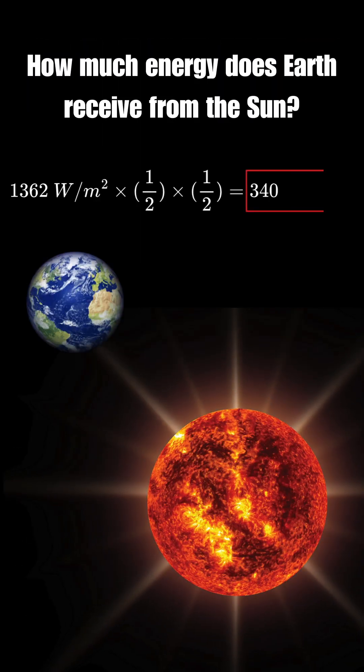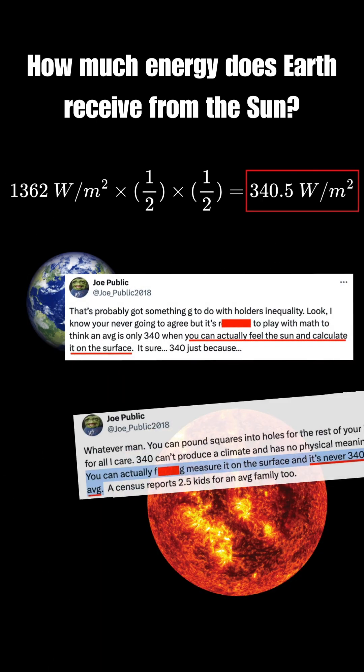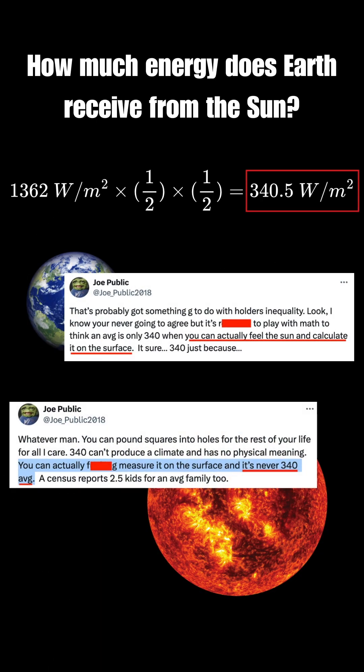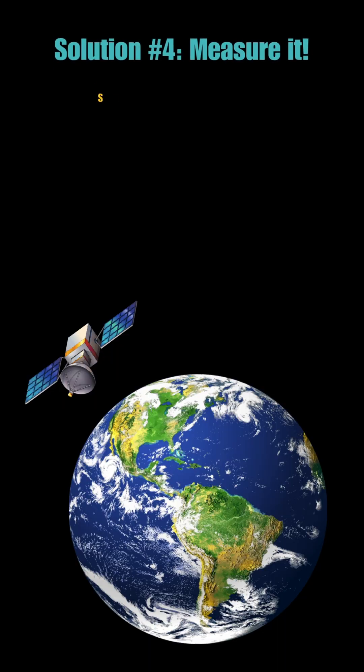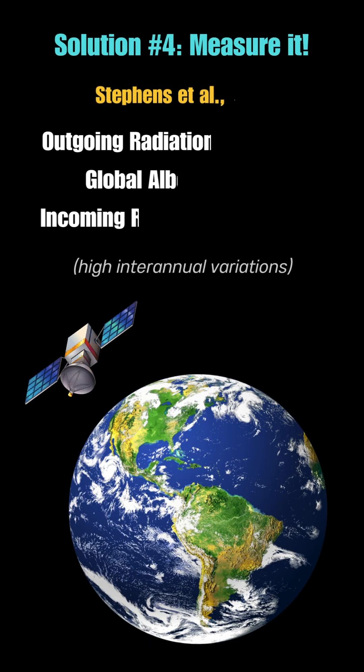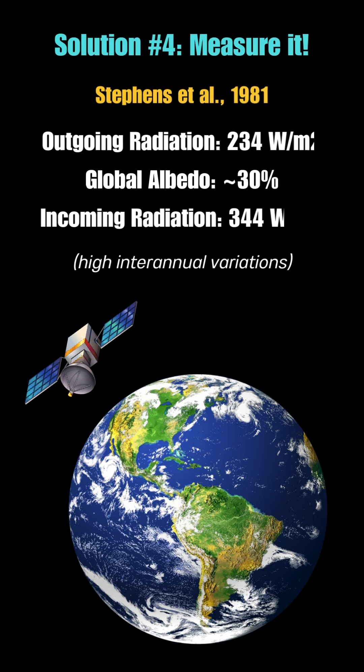Now that we've covered three ways to model solar radiation, you might be wondering: can't we just measure this directly? Why yes, we can. By 1981, available satellite data suggested 344 watts per square meter of insolation.